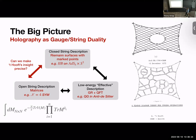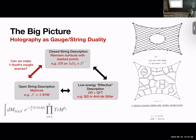Those marked points are where you insert vertex operators on your worldsheets to compute observables. Before AdS/CFT, this diagram was already in the original paper by 't Hooft where the 't Hooft expansion was proposed in 1973 — there was already the idea that large-N gauge theories were secretly string theories, and that Feynman diagrams should be thought of as a skeleton of a 2D surface, the worldsheet of the string dual.